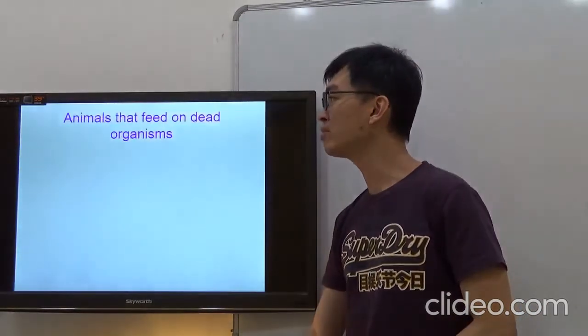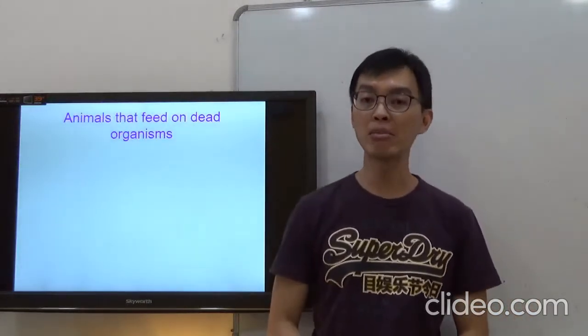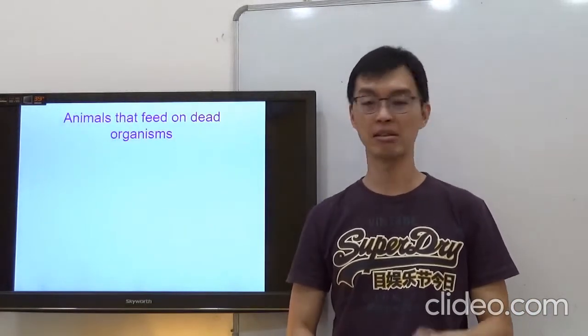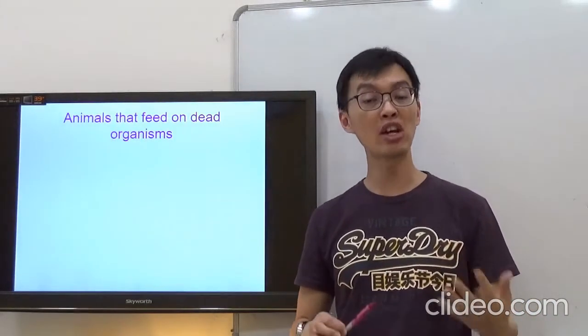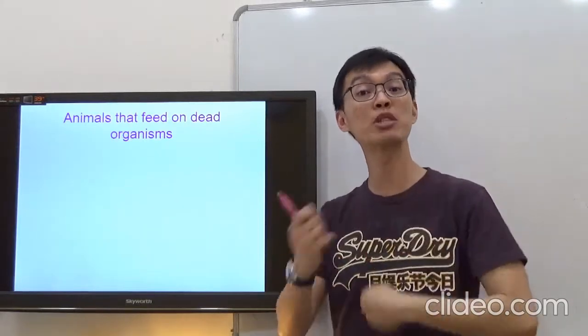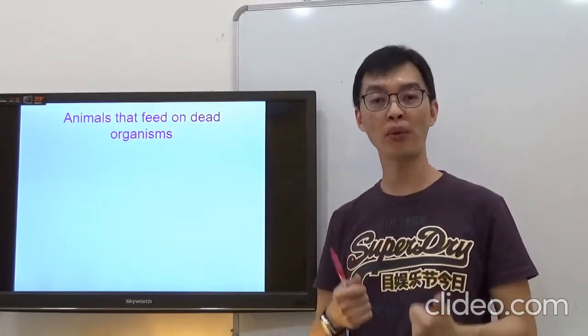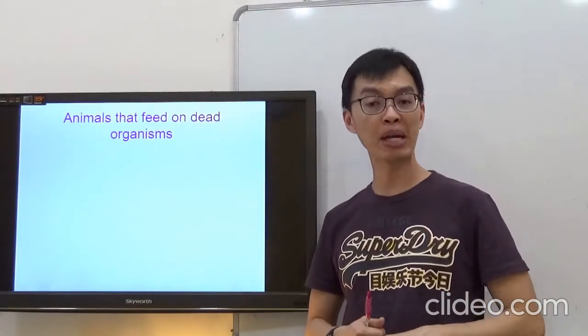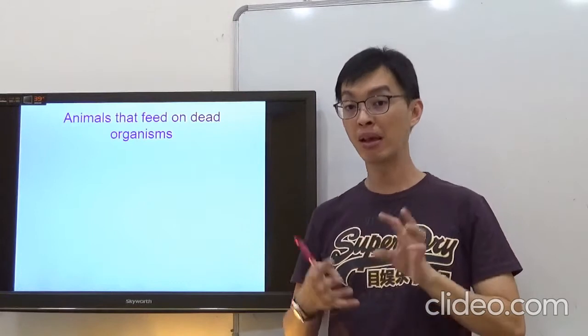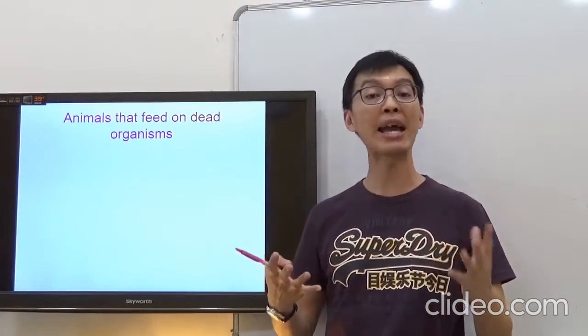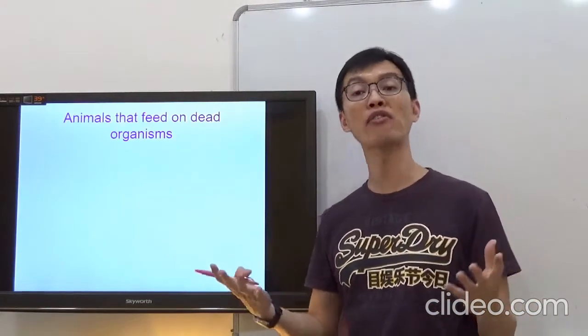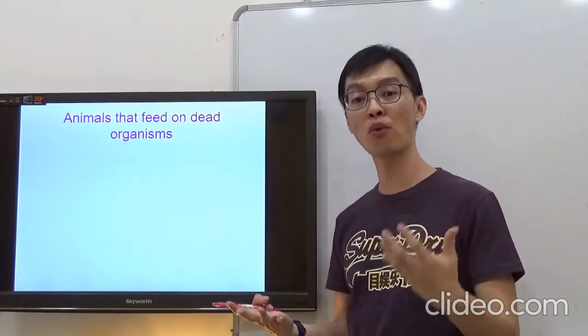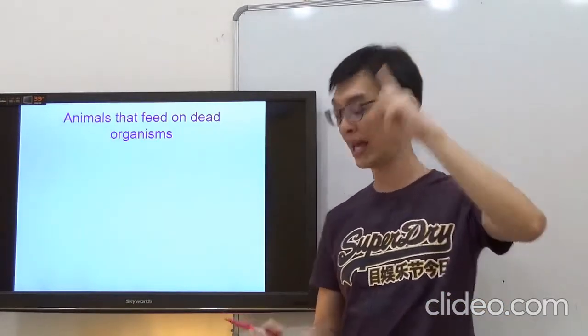Now, animals that feed on dead animals. Remember, there are animals that feed on dead animals. They are not called decomposers. They are actually animals that help to speed up the rate of decomposition. They speed up. Why is that they speed up? Because when they eat the dead organisms, they will increase the exposed surface area of the dead organisms. So when the exposed surface area increases, the rate of decomposition will increase.